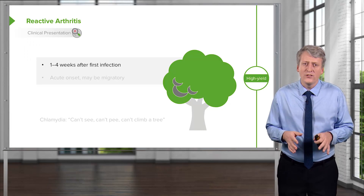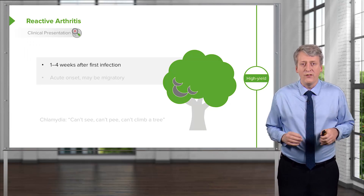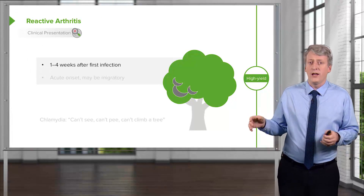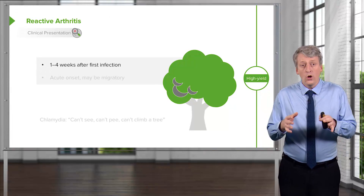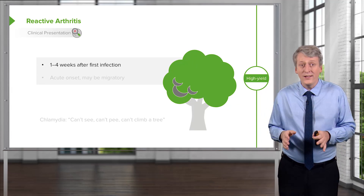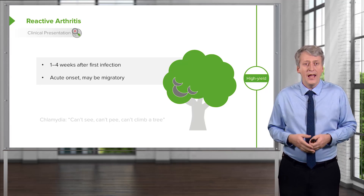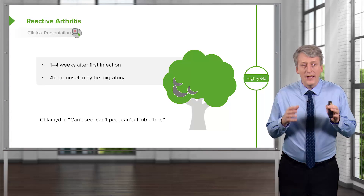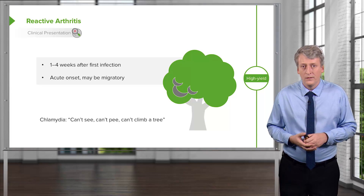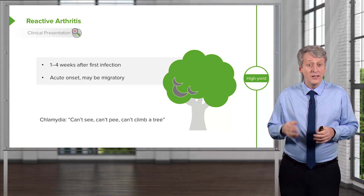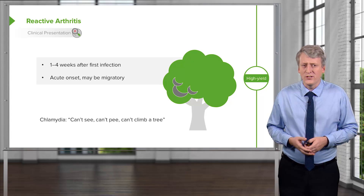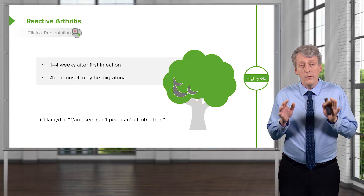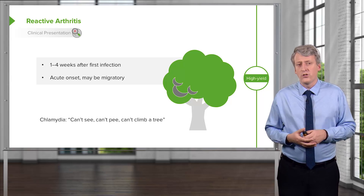Reactive arthritis is reactive — first you have the infection, you make antibodies against that bug, and those antibodies, through a freakish occurrence, also attack your joints later on. This usually happens one to four weeks after the first infection. It has acute onset and may be migratory, involving multiple joints. There's a classic phrase for chlamydia: can't see, can't pee, can't climb a tree — pointing to eye involvement, urethritis, and swollen knees. This is what we previously called Reiter syndrome, now called reactive arthritis.